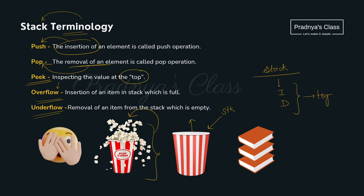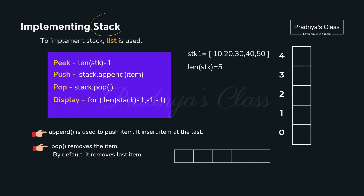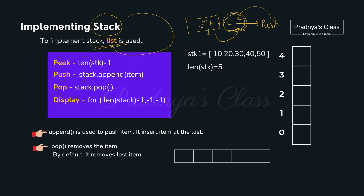Now let's understand how we implement stack in Python. For that we use a list. You are already familiar with the list, but now we are implementing stack using list. If you want to push any element, it will go to the last position. And if you want to pop any element, that too is done from the last position. We add an element to the list using the append function, and we delete the last element using the pop function.